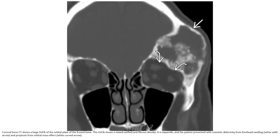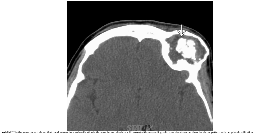Bone CT shows a large ossified fibroma of the orbital plate of the frontal bone. This ossified fibroma shows mixed ossified and fibrous density. It is expansive and the patient presented with cosmetic deformity from forehead swelling and proptosis. Non-contrast enhanced CT in the same patient shows that the dominant focus of ossification is central, with surrounding soft tissue density, rather than the classic pattern with peripheral ossification.